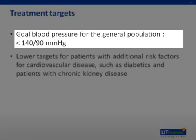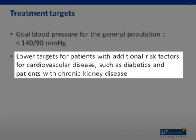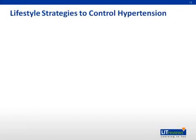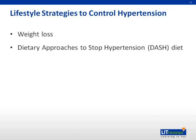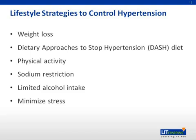The goal blood pressure for the general population is less than 140 over 90 millimeters mercury. Lower blood pressure targets have been set for patients with additional risk factors for cardiovascular disease, such as diabetics and patients with chronic kidney disease. A mainstay of therapy for patients with hypertension is lifestyle modifications, including weight loss, adoption of the DASH diet, increased physical activity, sodium restriction, limited alcohol intake, and stress minimization.